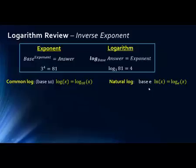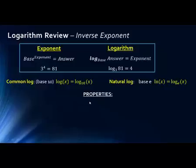We also have a natural log. This uses Euler's constant — e represents a constant, Euler's constant, and that's the base. So when we have a log base e, we actually write this as ln, which stands for natural log. You would not write log base e of x; you would write ln of x.